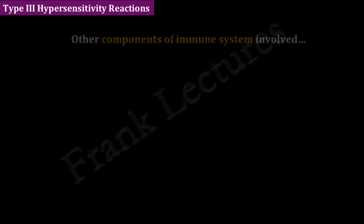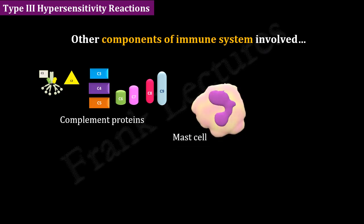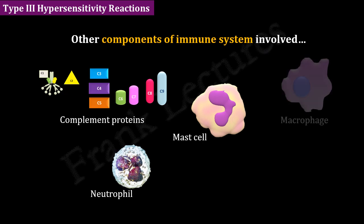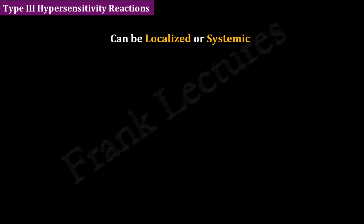Besides antibodies, the other components of the immune system involved are complement proteins and leukocytes such as mast cells, neutrophils, macrophages, and natural killer cells. Like all other hypersensitivities, type 3 hypersensitivity reactions can be local or systemic, depending on whether the damage appears locally or systemically.